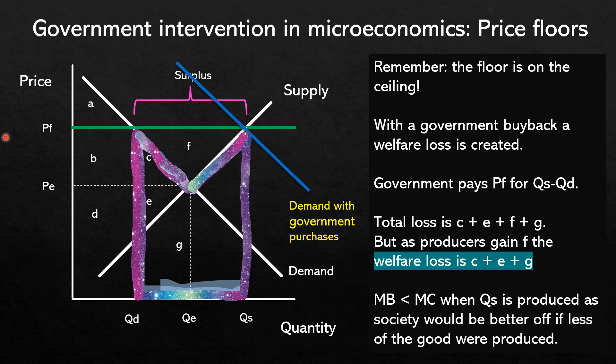Consumers are worse off as they have to pay the price floor — the higher price. Producers gain, which is of course the main point of the price floor. Workers may also gain from more employment. Government incurs costs and the burden of working out what to do with the excess product. The impacts on other countries depend on their own government's policy and what is done with the excess supply. Depending on the specific scenario and details given, you can then evaluate whether or not the price floor is a justifiable government intervention in an agricultural product market.